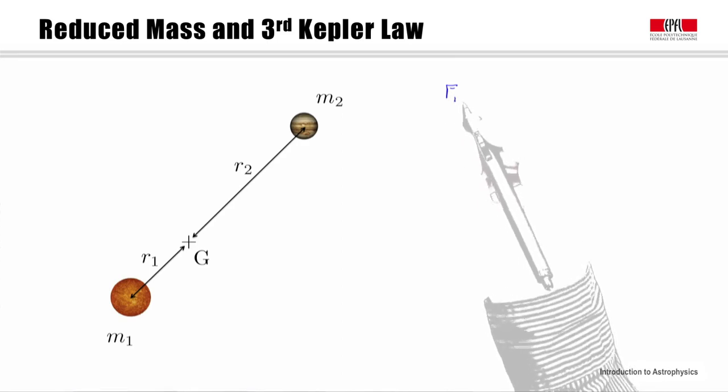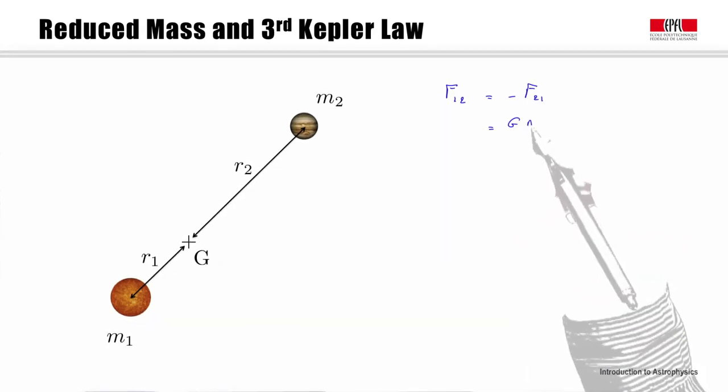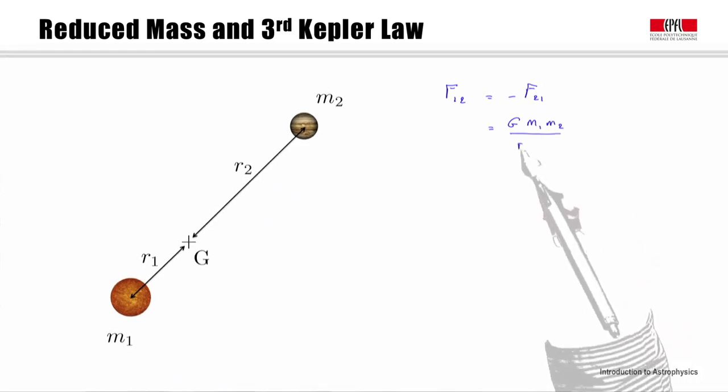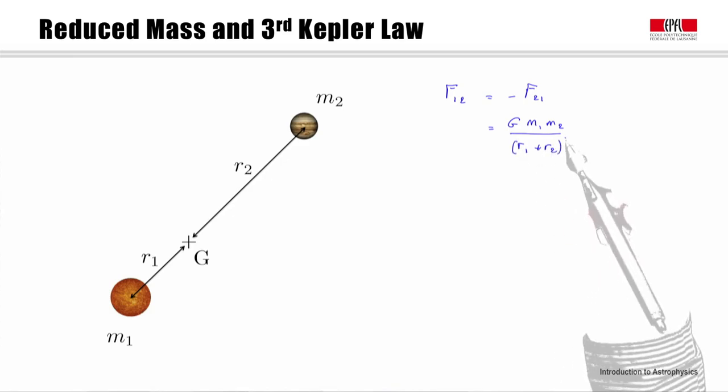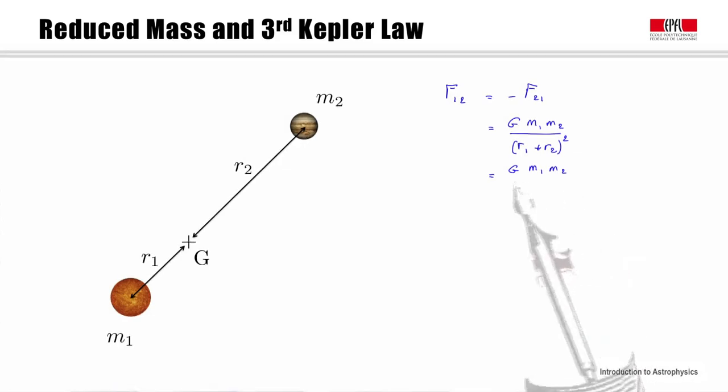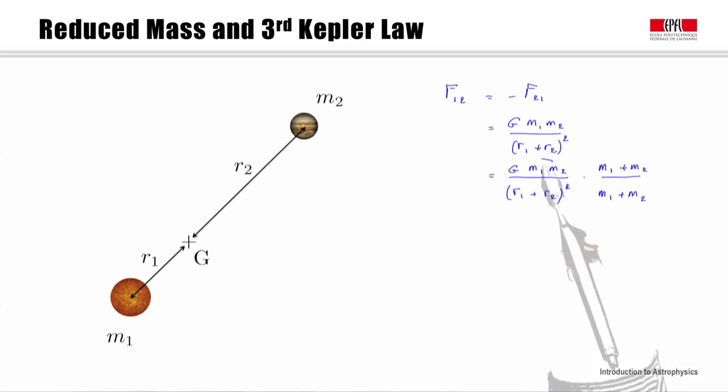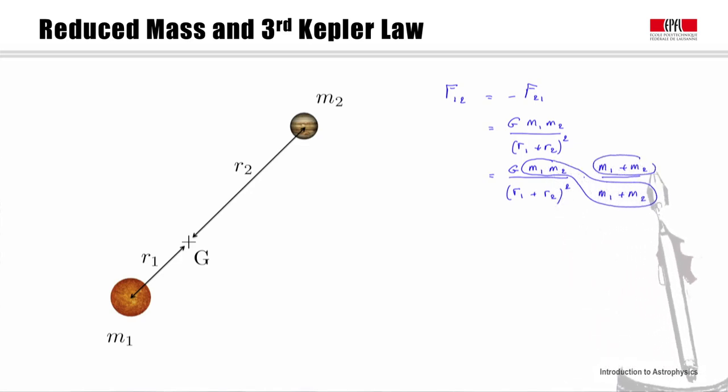The gravitational force that one exerts on two is, of course, equal to minus the force by two on one. Its value is G m1 m2 over the distance between the two bodies, that is (r1 + r2) squared. This is simply Newton's law. I can multiply this equation by any quantity. I have here multiplied the top and bottom part by the same quantity. I can now rearrange the terms, for example, by grouping these terms here. This term is the total mass of the system, M = m1 + m2. And this is another mass, which we write mu, the reduced mass of the system.